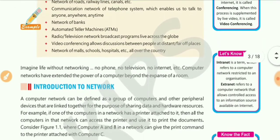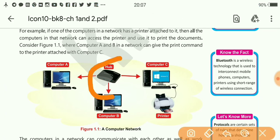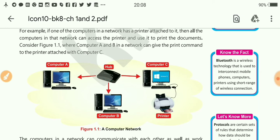Going back to our book, you can see in this picture there are three computers connected with each other using a hub, and one computer has a printer attached to it. So all other computers can share this printer via this network. The hub is the main device connecting these computers — this hub here is connecting all three computers.